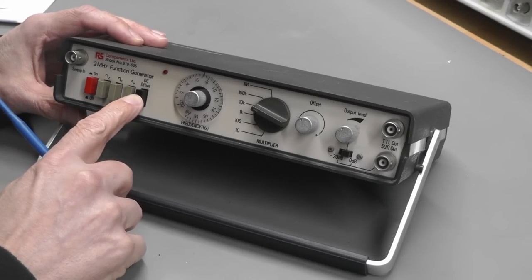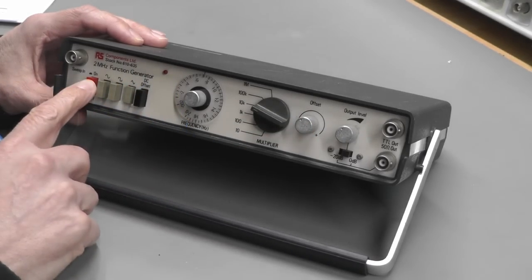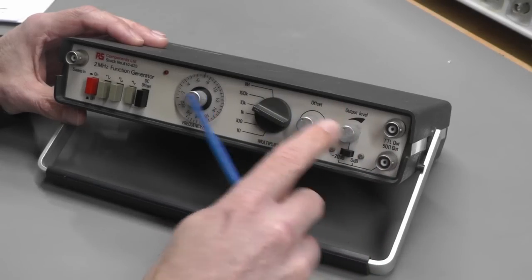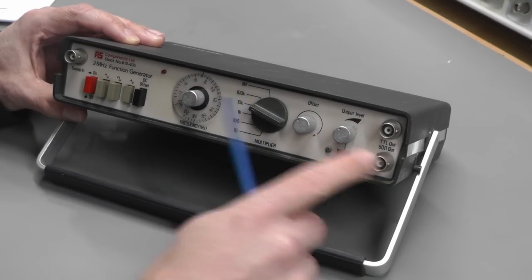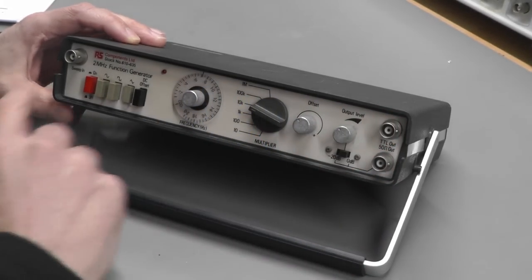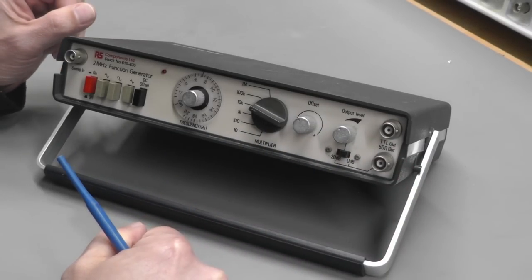You can switch in and out a DC offset here, power button, a sweep input, the output level control, a minus 20 dB switch, the main output and a TTL output there. It's a particularly simple device.